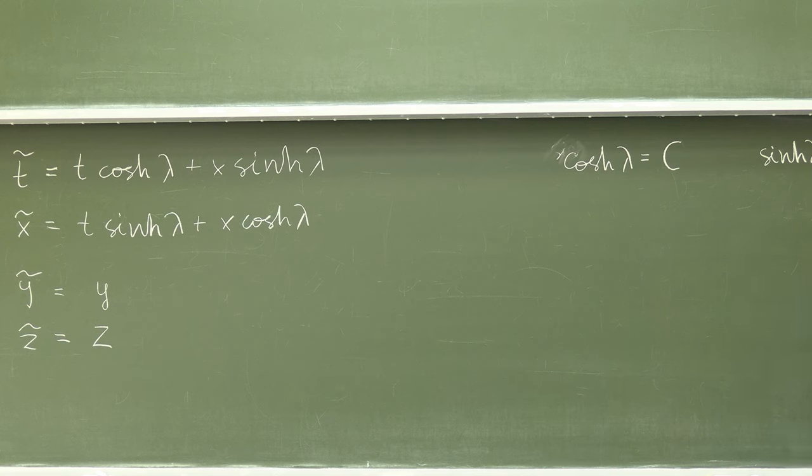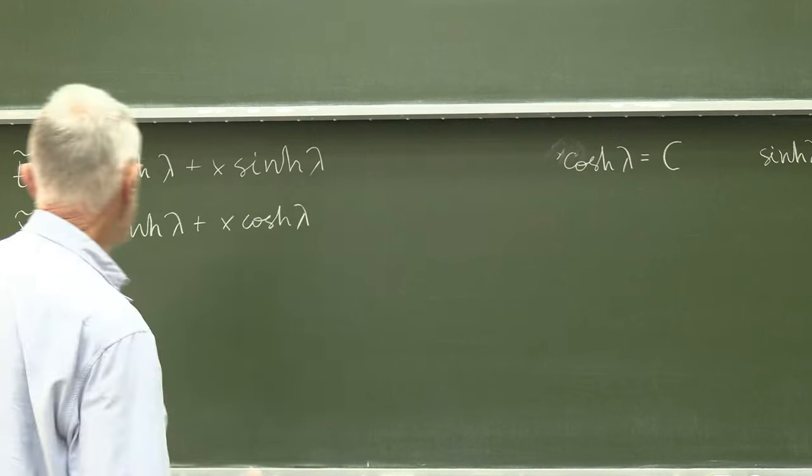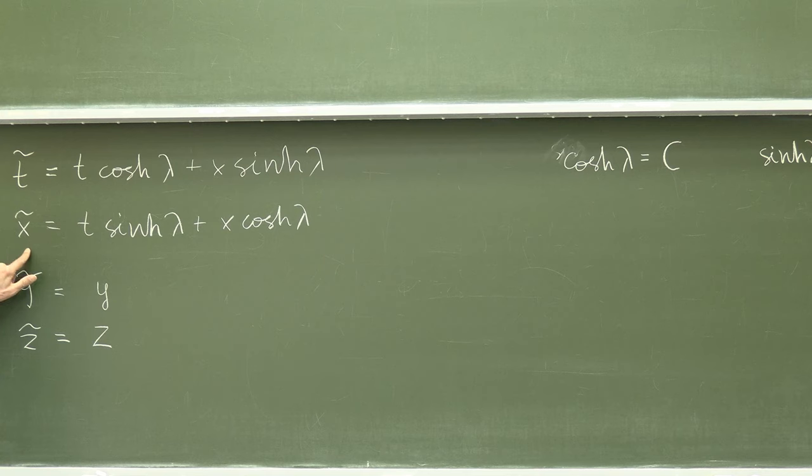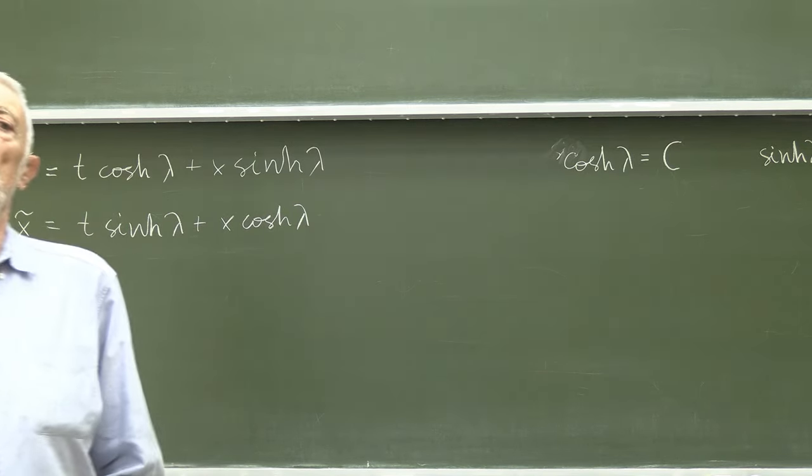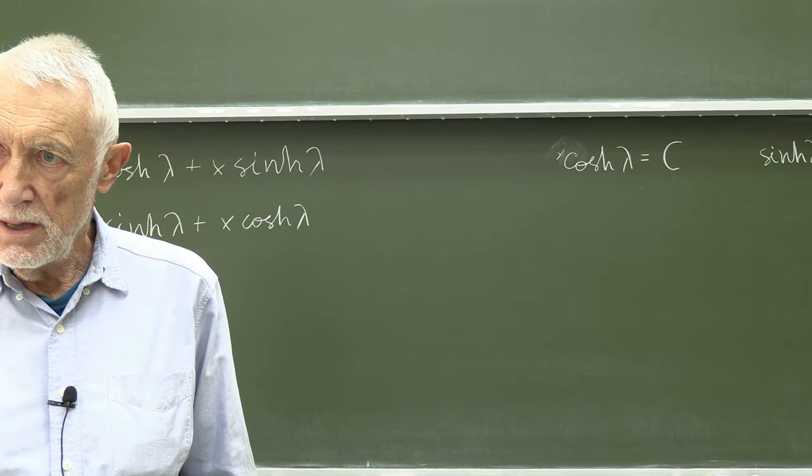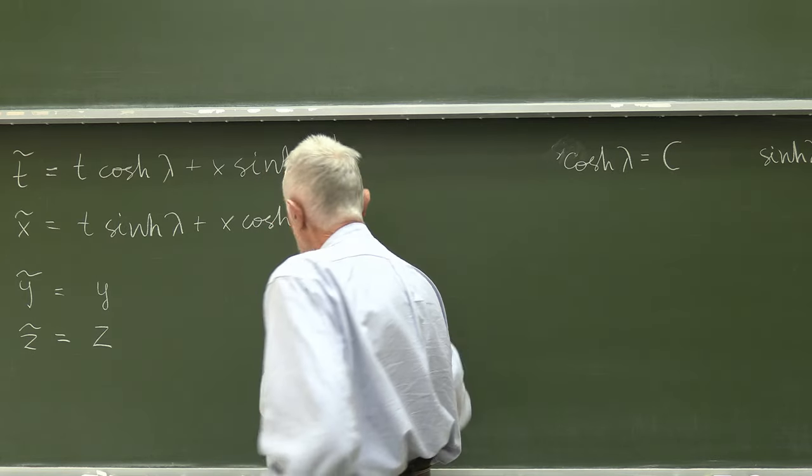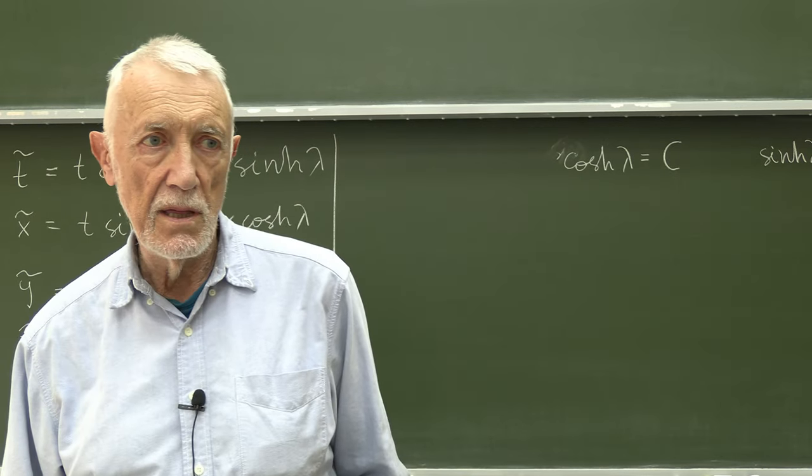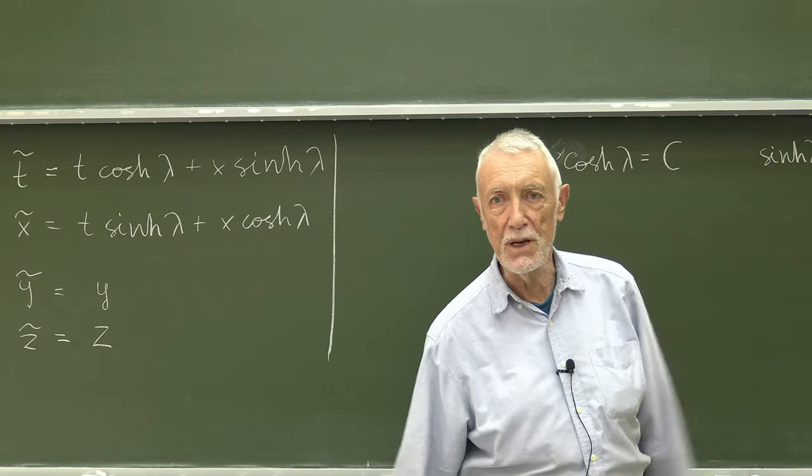In physical units it was minus u over c, where u was the velocity of the new observer. The new observer is the one which remains at point new x equal zero. This gives that x is proportional to t, and this proportionality coefficient we call simply velocity. The inverse transformation consists in changing lambda to minus lambda, or changing u to minus u.